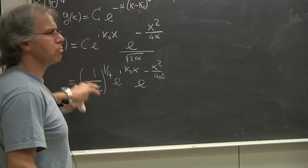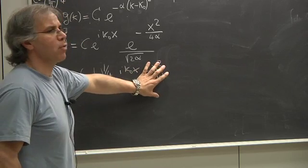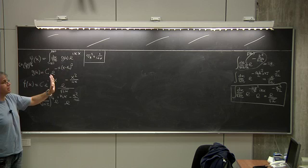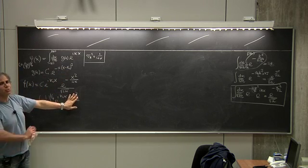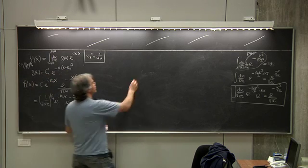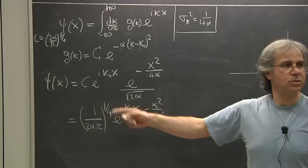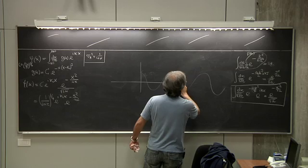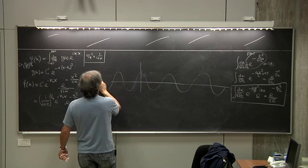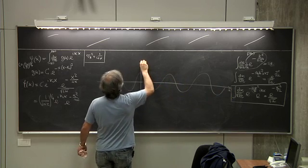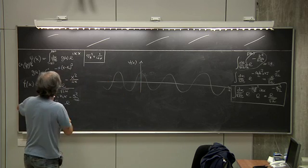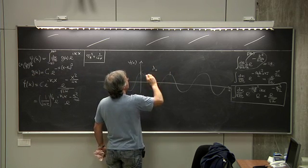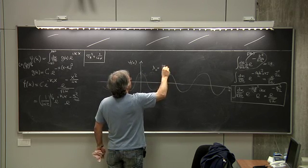Apart from the normalization constant, let's examine the result. It is like a plane wave — a plane wave with wave vector k0, the one in which the weight is centered. If I draw the real part, it would be a cosine of k0 x, oscillating forever. This quantity is related to k0: lambda 0 equals 2 pi over k0.